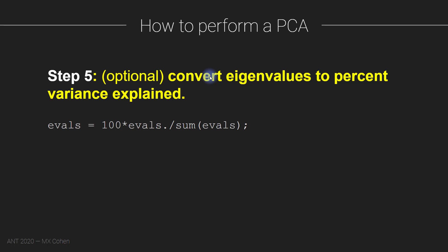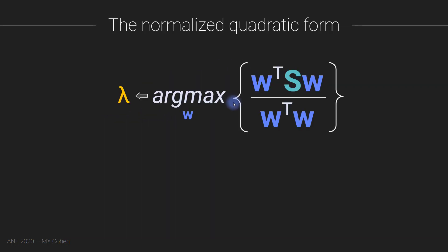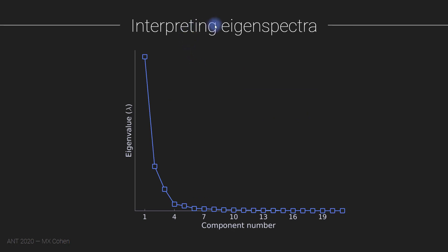Additional steps include converting eigenvalues to percent variance explained and making topographical maps of the eigenvectors for anatomical interpretation. After sorting eigenvalues, you get a plot with components on the x-axis and eigenvalue on the y-axis — this can be in raw eigenvalue units (units of the data) or converted to percent variance. For example, the first component might account for 70% of variance, the second for 20%, the third for 5%, and all remaining components together for 5%.